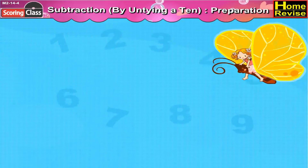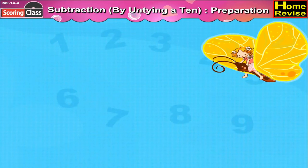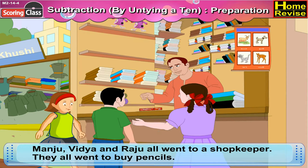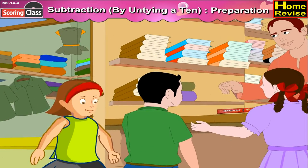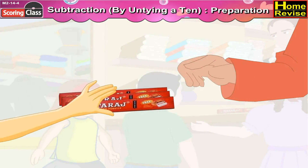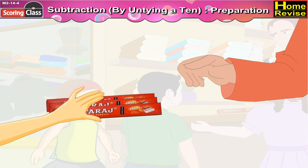Subtraction by untying ten — preparation. Manju, Vidya, and Raju all went to a shopkeeper. They all wanted to buy pencils. Manju said to the shopkeeper, I need thirty pencils. So the shopkeeper gave three boxes of ten pencils each to Manju.